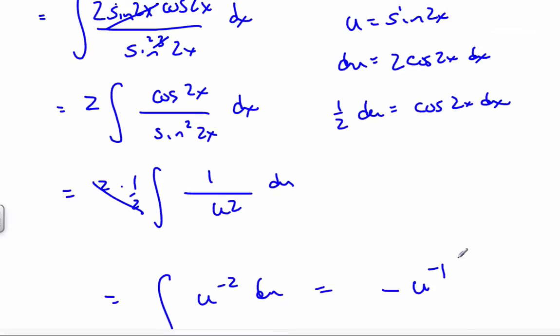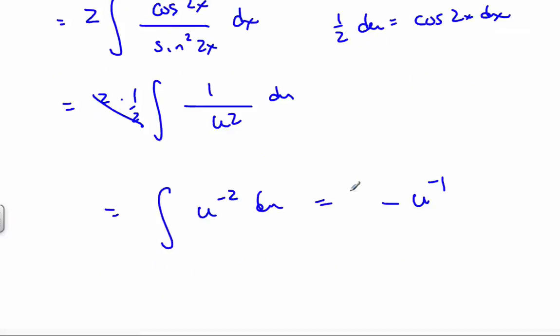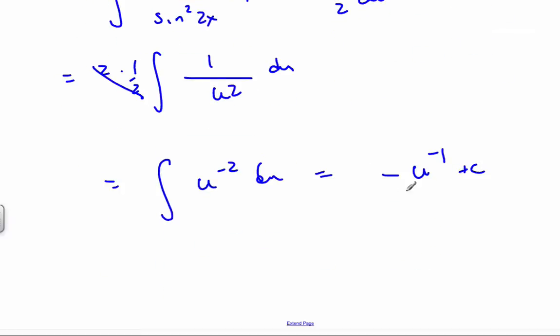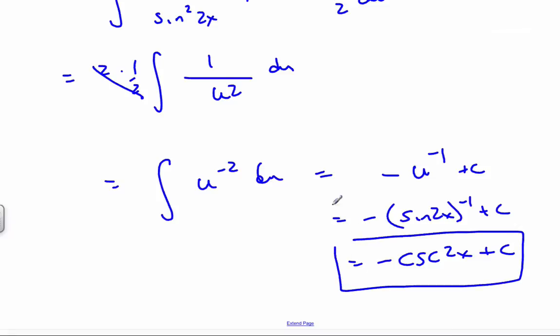which is simply add 1 to my exponent, to the negative. If I remember u is sin 2x, so it's equal to minus sin 2x to the minus 1 plus c. Well, to the minus 1 is just simply cosecant 2x plus c. And there's my final derivative.